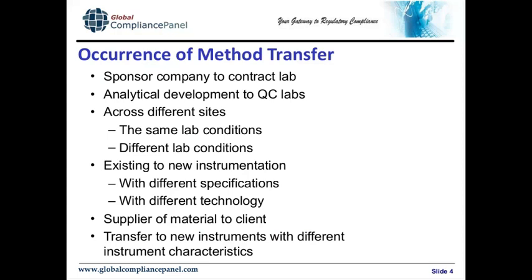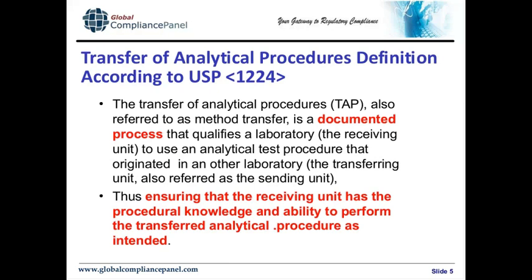A pharmaceutical company can also transfer methods across different sites, where lab conditions could be slightly different or the same. Methods may also be transferred to new instruments — for example, to instruments with new technologies, such as when a standard column HPLC is replaced by UHPLC — or to instruments with different specifications. Sometimes suppliers of chemicals also transfer the method for testing to the client, because the user of the chemicals does not have to develop and validate the method. They just use the transfer protocol, which is much simpler and easier to do.